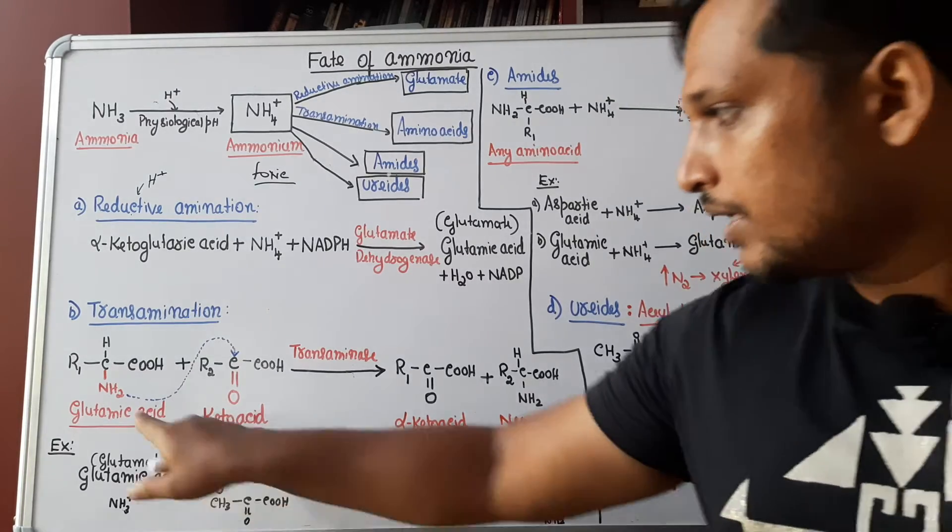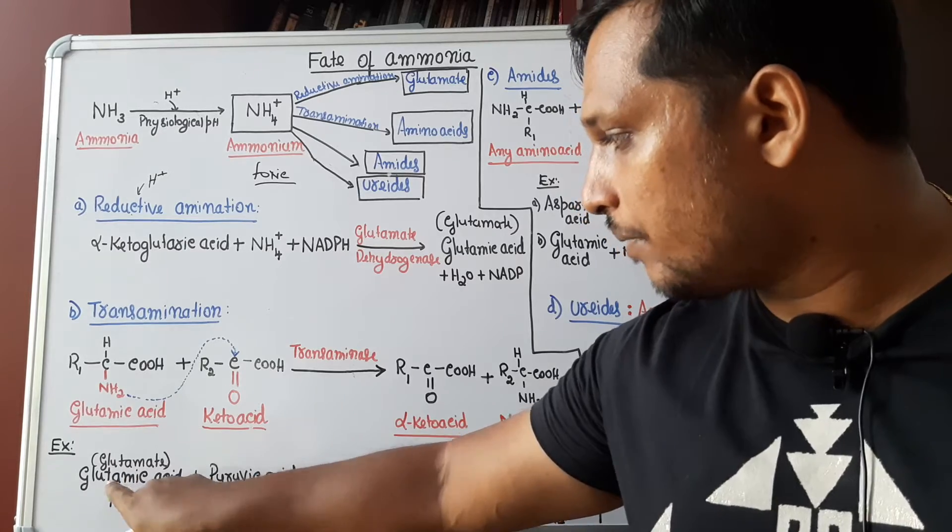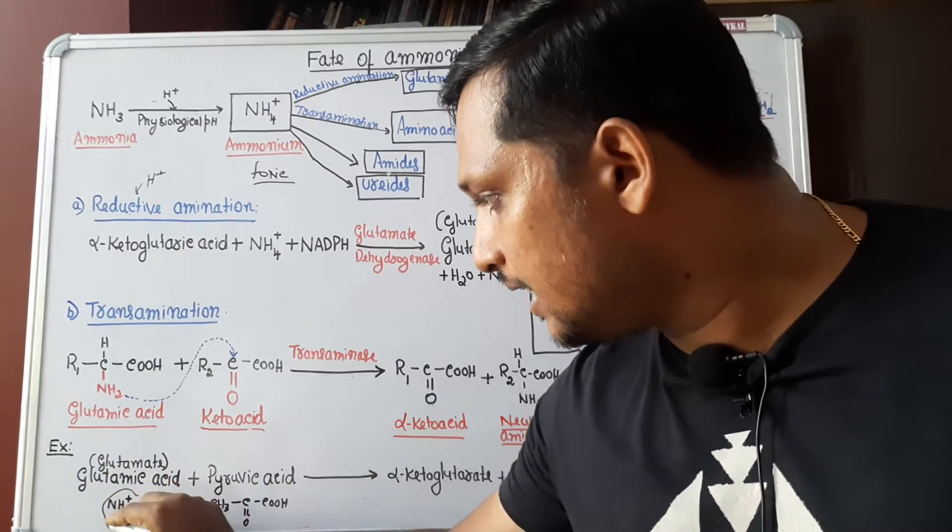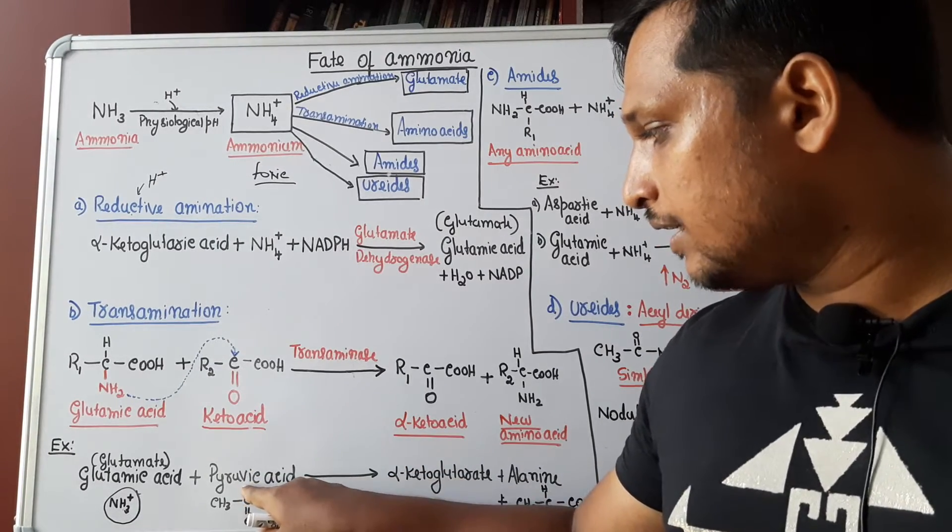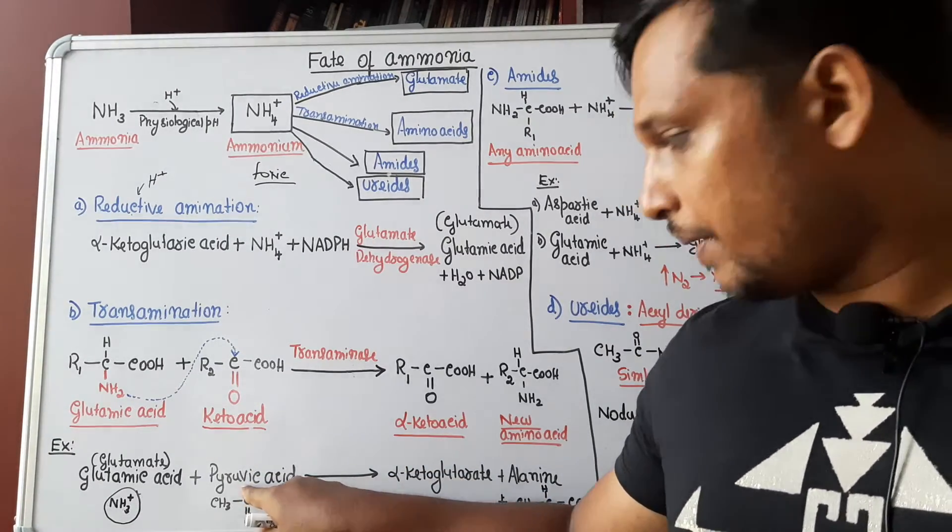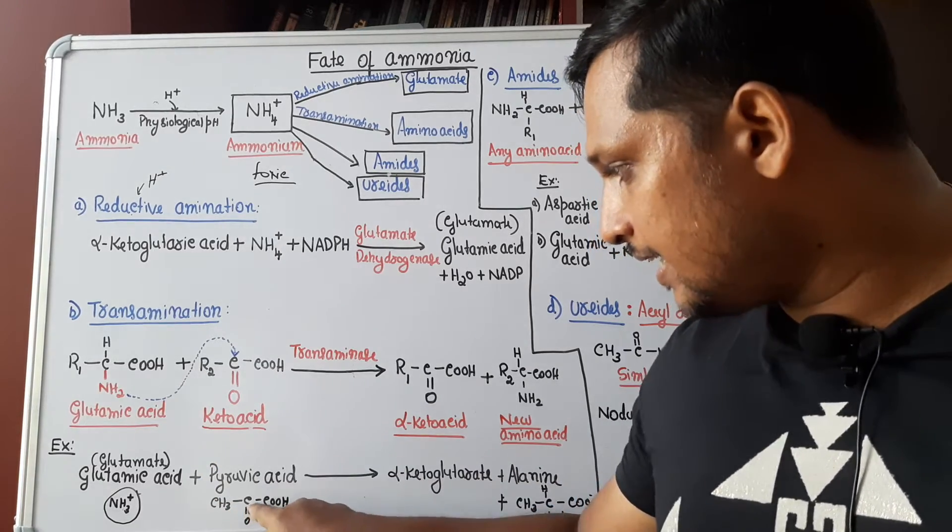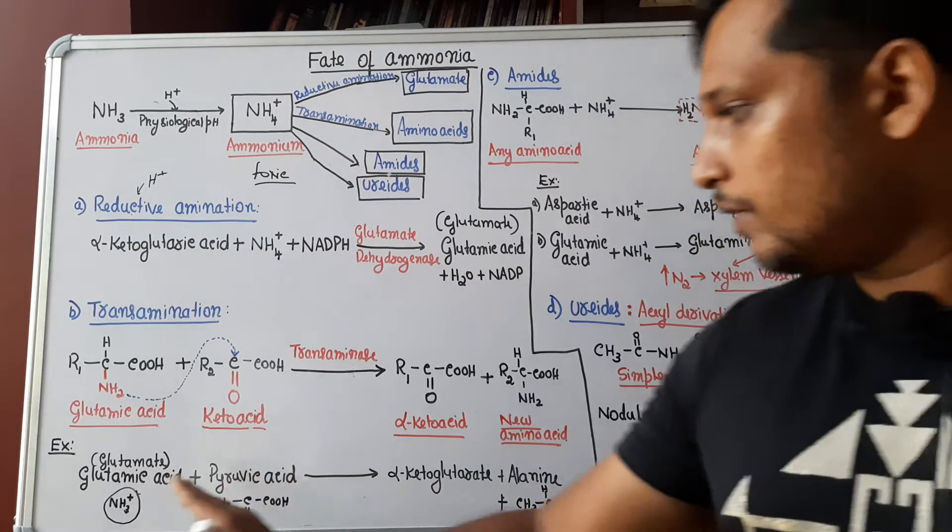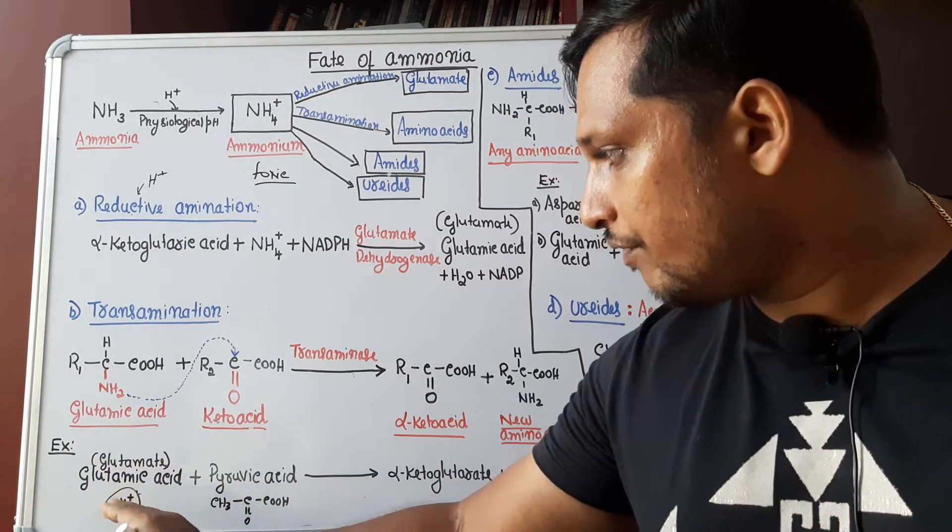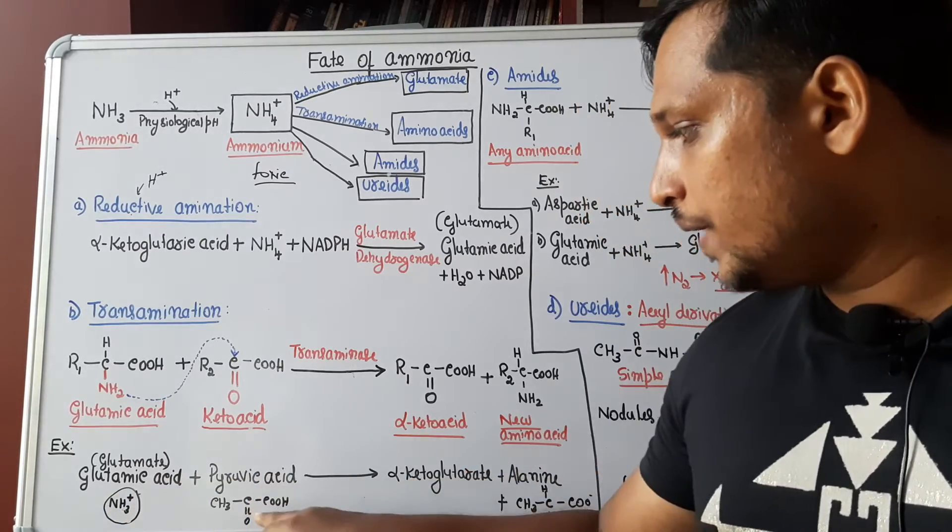Let us take one example. In place of glutamic acid, I have taken same thing, glutamic acid or glutamate. It will be having NH3 plus group. In place of ketoacid, I have taken one ketoacid like pyruvic acid. Pyruvic acid will be having, in place of R2, there is CH3. Then remaining things are same. In the presence of transaminase enzyme, what will happen? Transamination refers to transfer of amino group from an amino acid to a ketoacid.